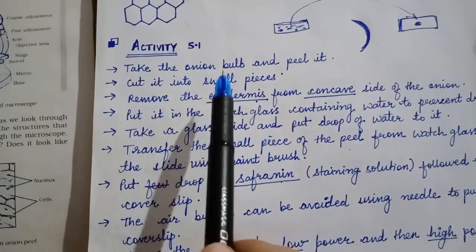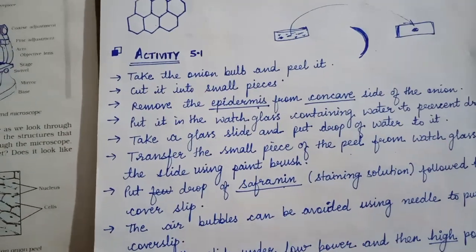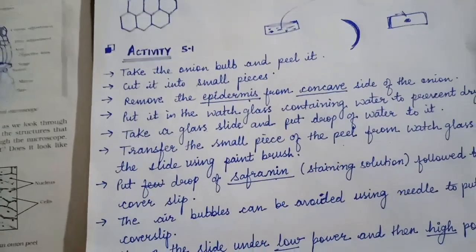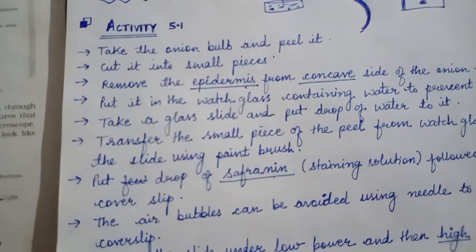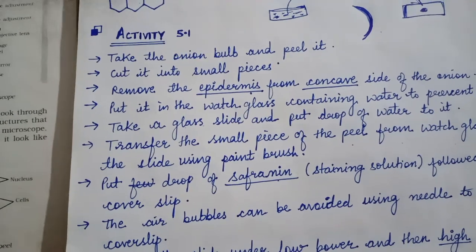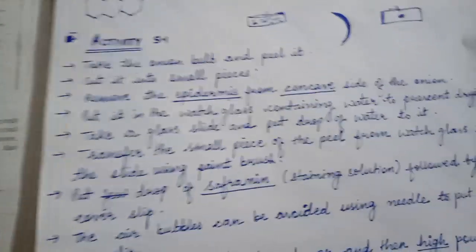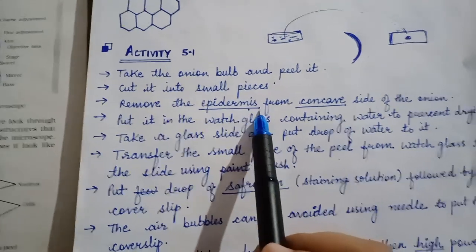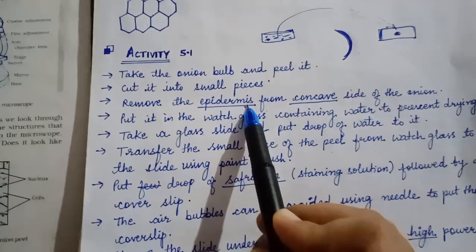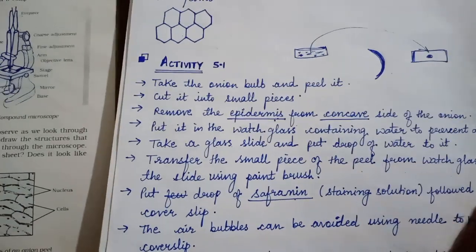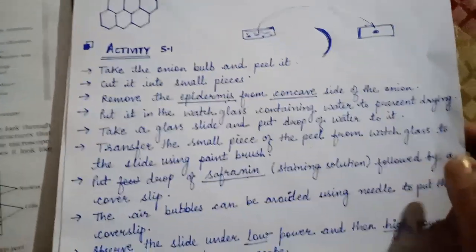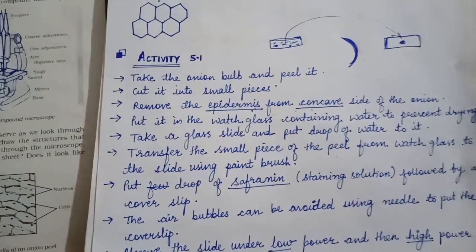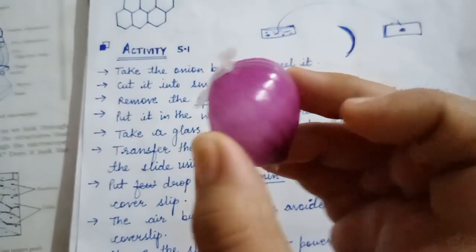Okay, now activity. In this activity we will take onion bulb. Onion bulb jo pyaaz hota hai, hume woh lena hai. And after that we will peel off, usko pyaaz ko hum chheel denge. Next, that cut it into the small pieces. Pyaaz ko small pieces mein cut kar dena hai. And after that we will remove the epidermis. What is epidermis? It is the outermost layer of cells.